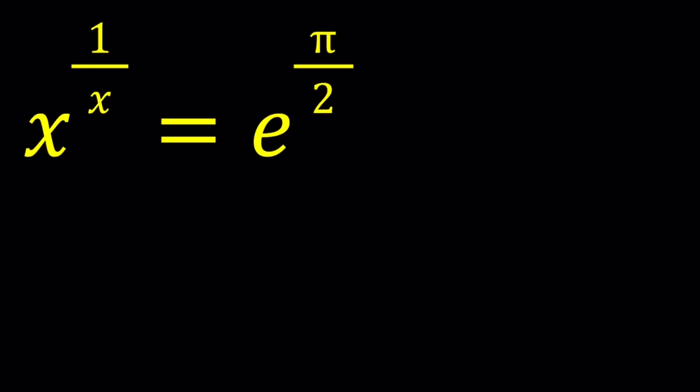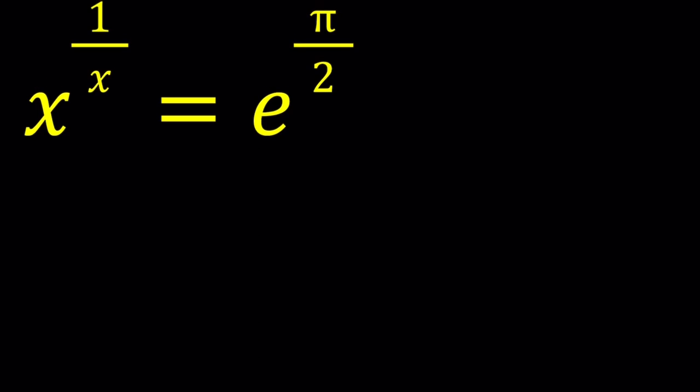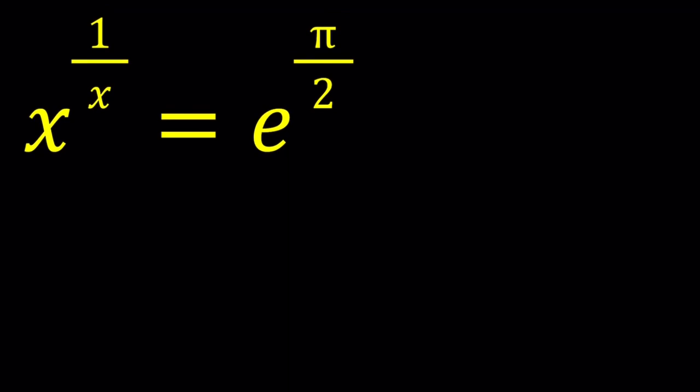Before we get started with the solution, I just want to show you something. A lot of times with equations, we can take a look at the graph to find out about intersection points, if there are any solutions, or how many solutions there are. It doesn't give us the exact solutions all the time, but it gives us an idea how these two functions interact. So let's take a look at the graph of y equals x to the power 1 over x, along with the horizontal line y equals e to the power pi over 2, to get a better understanding.